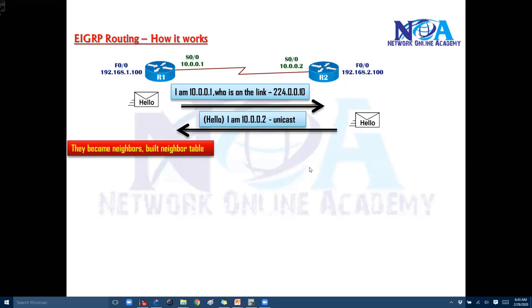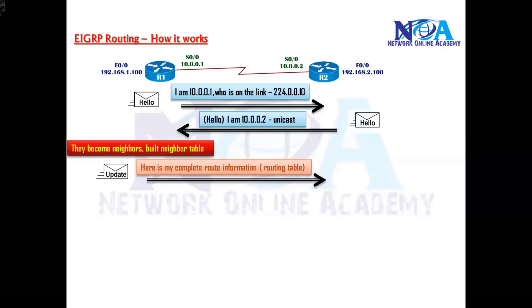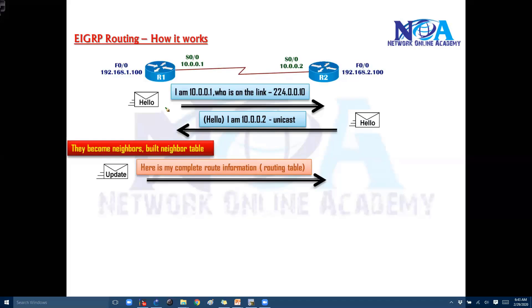And once they become neighbors, now they will start exchanging the routing information. Now when they decide to exchange the routing information they just send an update. And in that update it is going to include the routing table. Now unlike OSPF, OSPF is going to exchange a few different messages, but whereas here this router already has some kind of routing table.